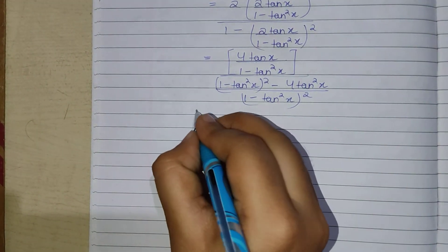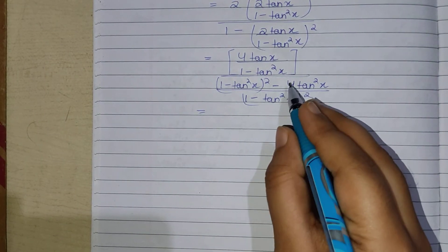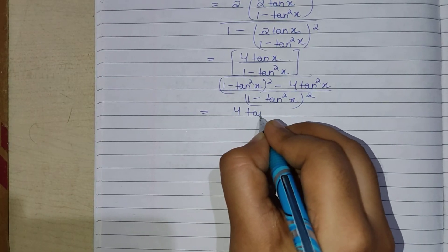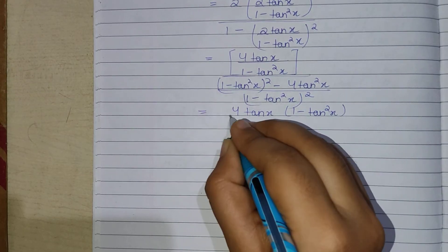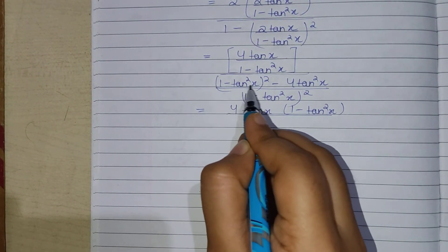We can cancel this 1 minus tan square x in the numerator and denominator. We get 4 tan x into 1 minus tan square x upon the simplified denominator.